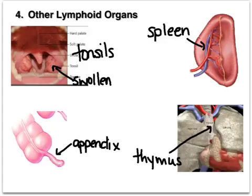Four other lymphoid organs to be aware of are the tonsils, the appendix, the spleen, and the thymus. The tonsils are the first protecting entrance, trapping foreign antigens that come in with food, serving as a first line of defense — which makes sense as a lymph organ located in the mouth.